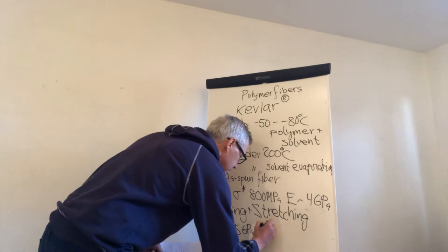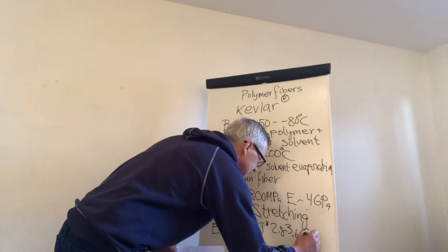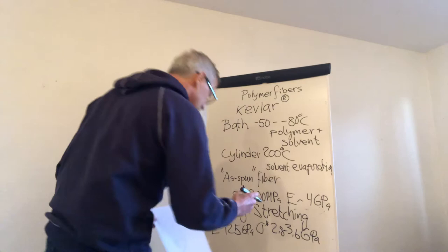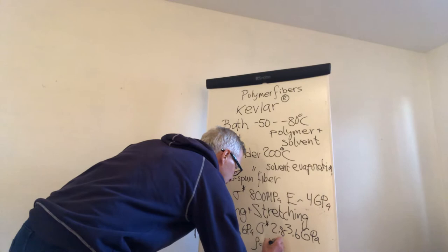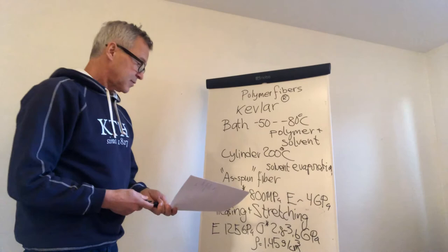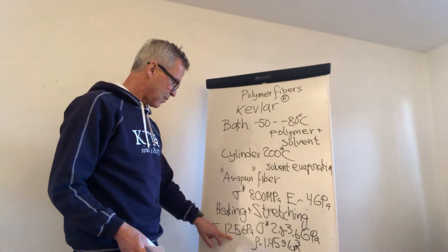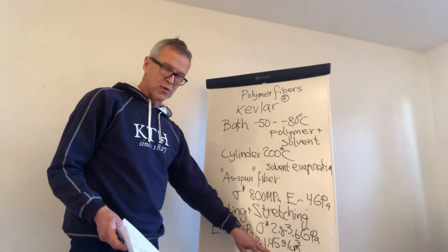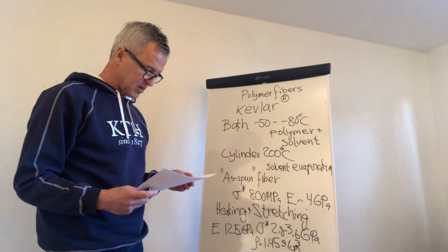We have a strength of 2.8 to 3.6 gigapascal. It's a polymer, so the density is 1.45 grams per cubic centimeter. That's pretty impressive. That's more than half the value of steel modulus, and the density is 1.45. For steel we have 7.8 grams per cubic centimeters, so this is actually very good.